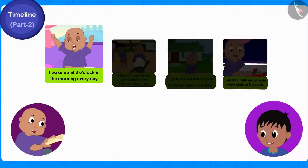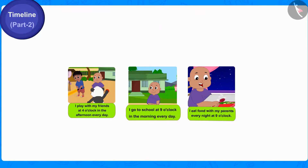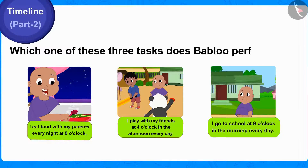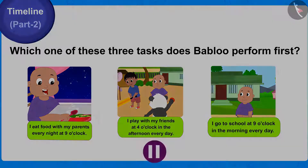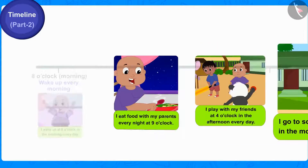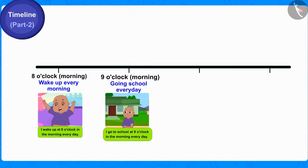Now Raju asked Babalu to identify which one of the remaining 3 tasks he performs next in sequence in the morning after waking up, before he performs the other tasks in the day. Children, can you tell according to time which one of these 3 tasks does Babalu perform first? You can stop the video and find the answer. Babalu first goes to school at 9 o'clock in the morning. Raju now wrote 9 o'clock in the morning on the timeline and drew a picture below it.